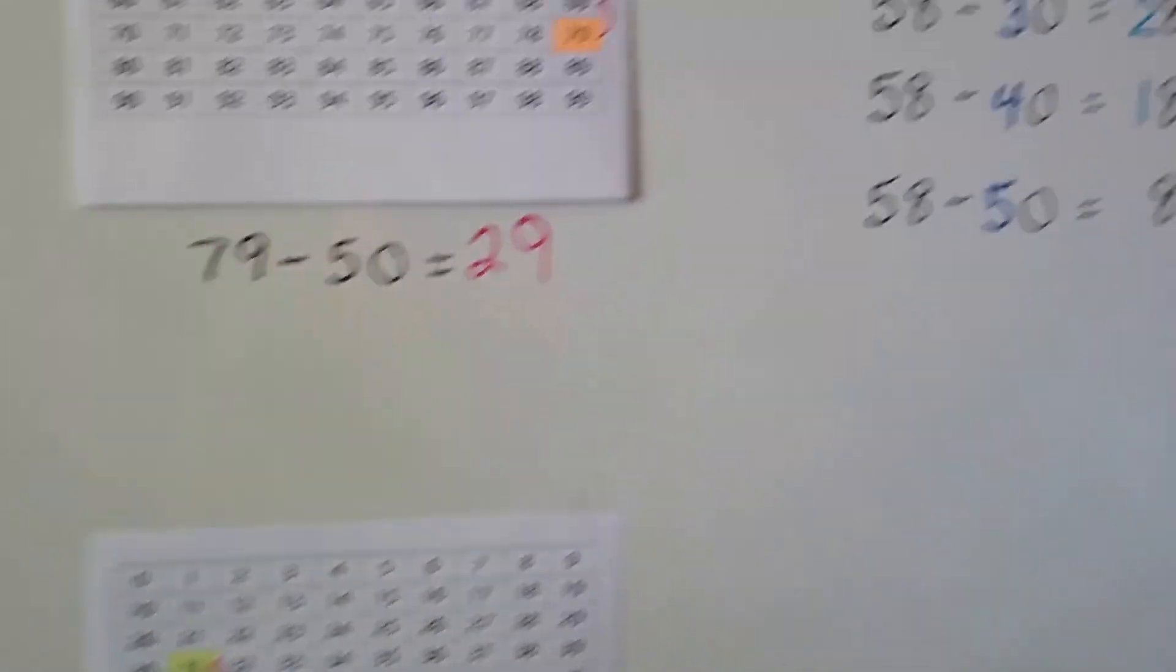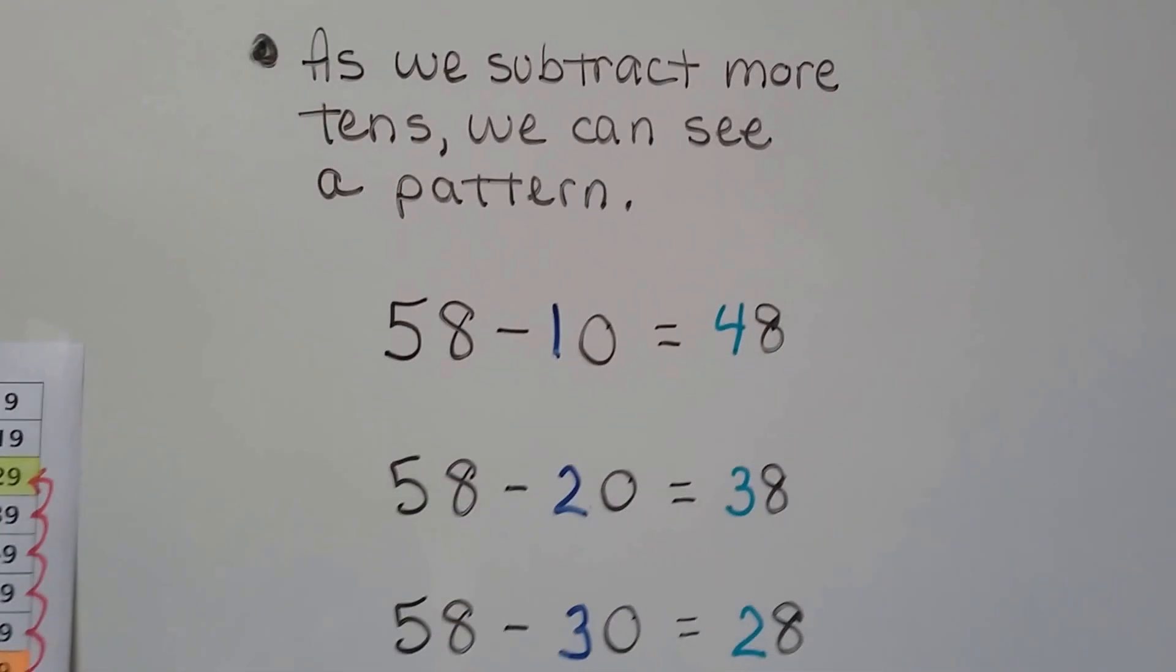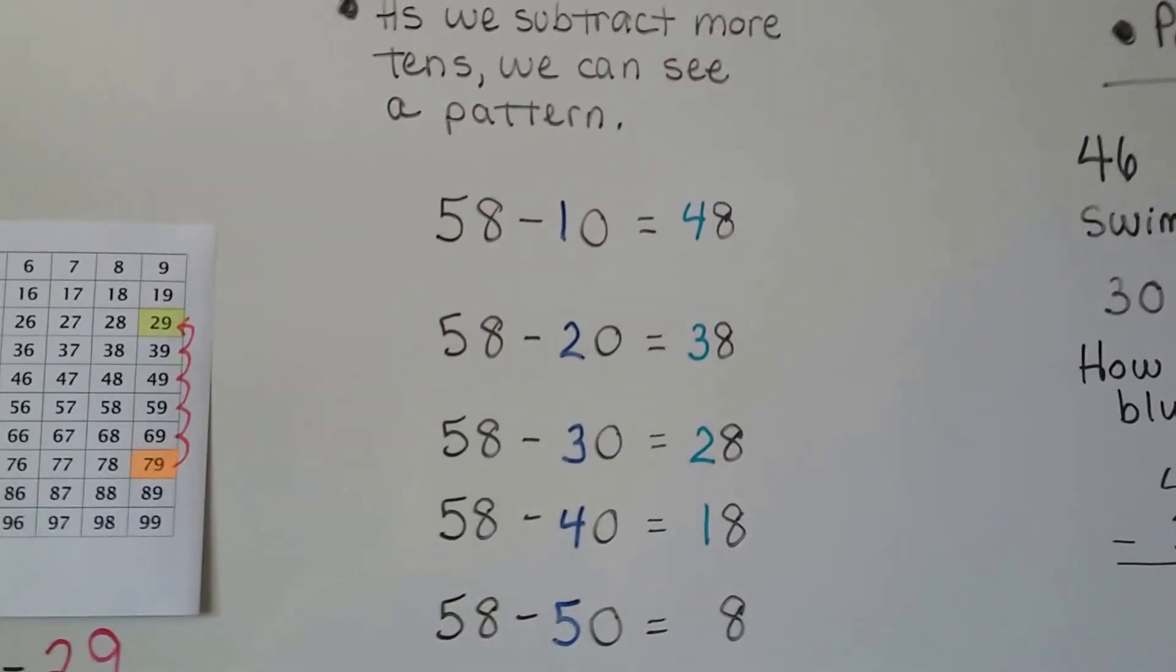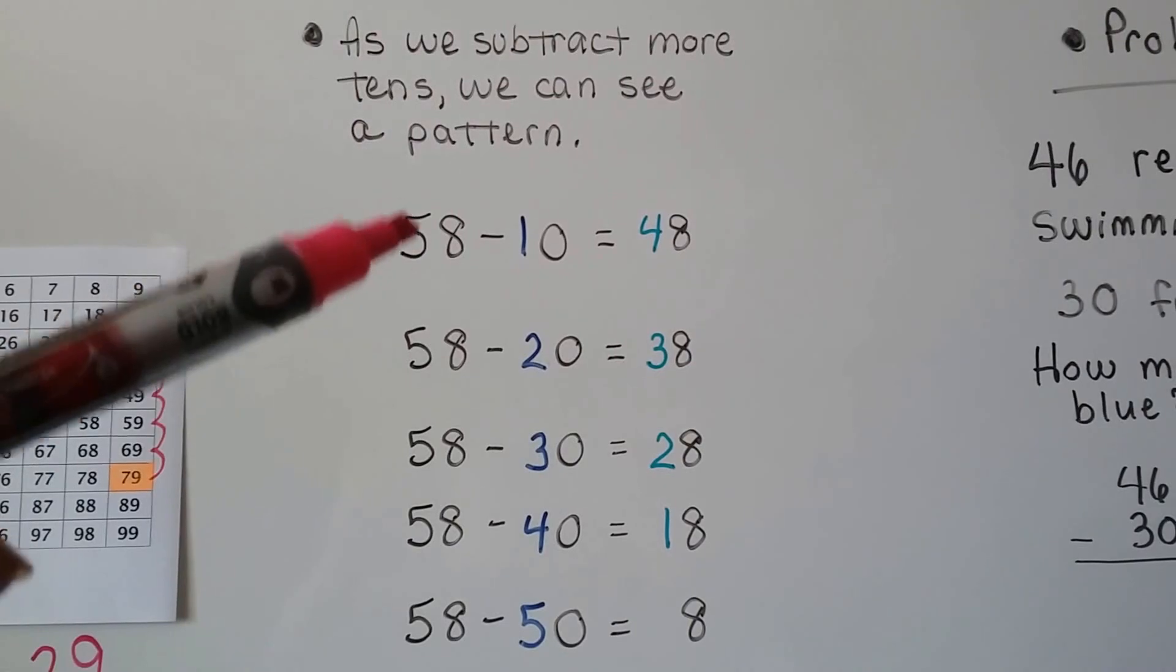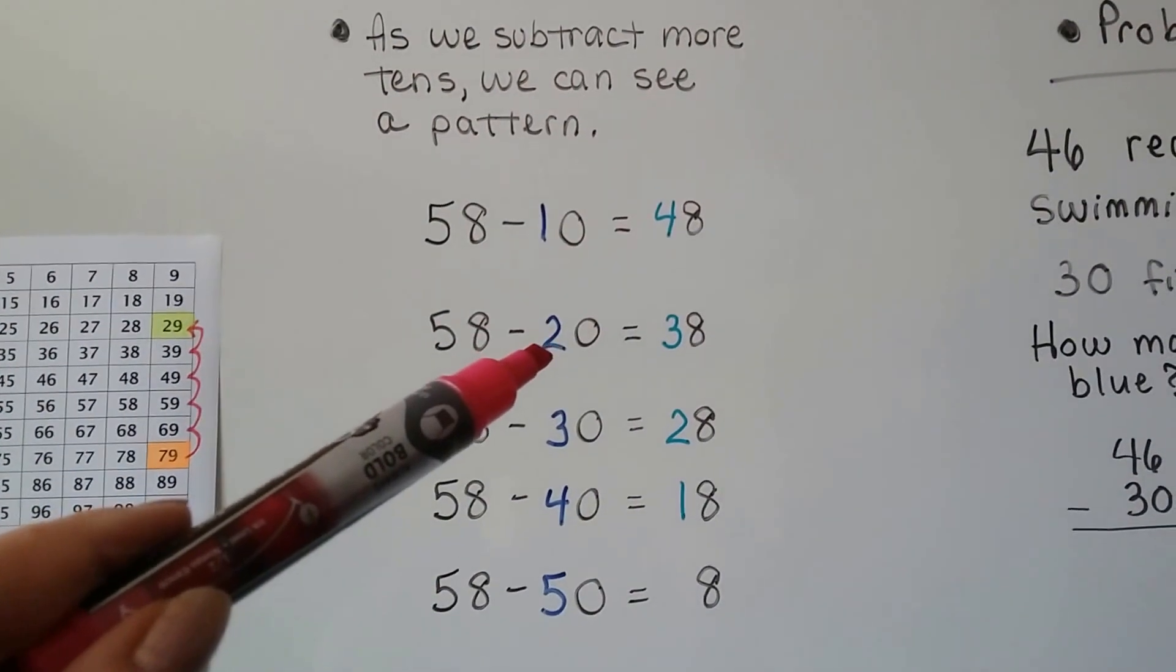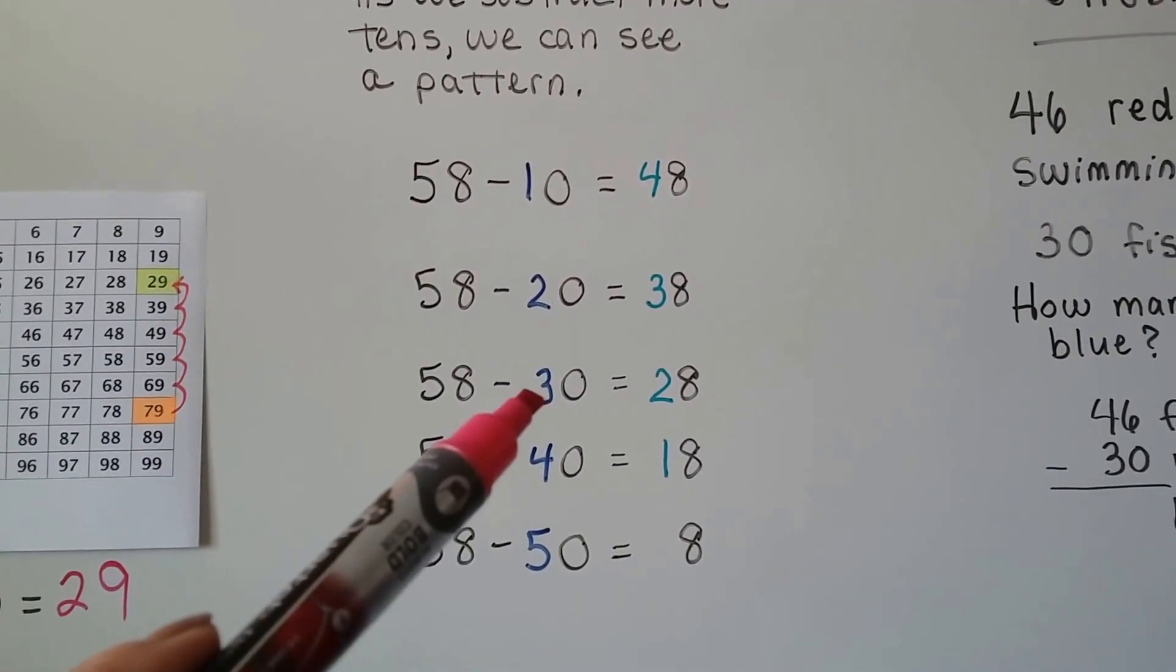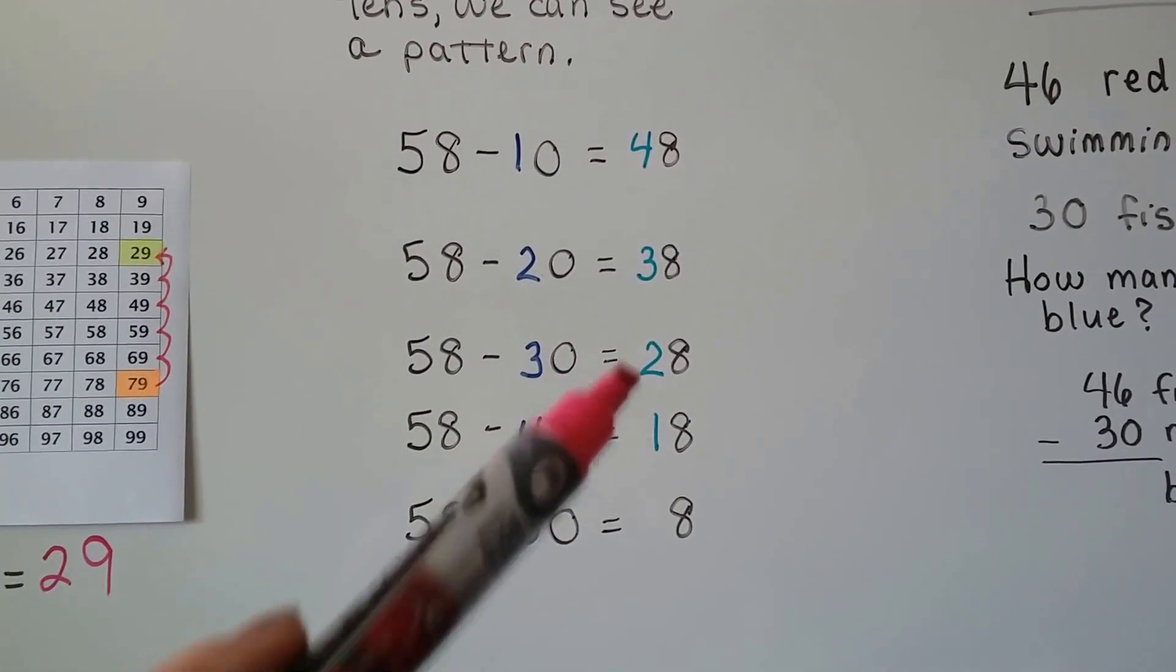Now there's patterns. As we subtract more tens, we can see a pattern. Here we have 58, and we're gonna subtract 10, 20, 30, 40, and 50. When we subtract one 10, the five goes down to a 4. See? Because we took one of the tens away. When we subtract two tens, a 20, it goes down to a 3, because the 2 and the 3 equals 5. When we subtract 30, that's three tens, this is gonna go down by 3, so it goes down to a 28.